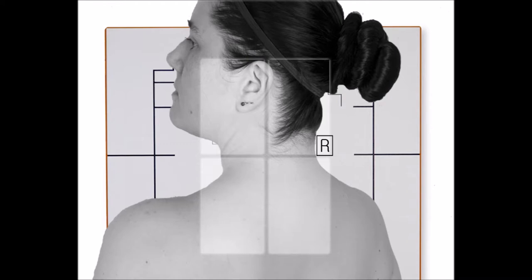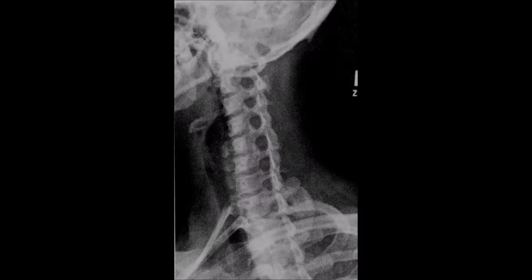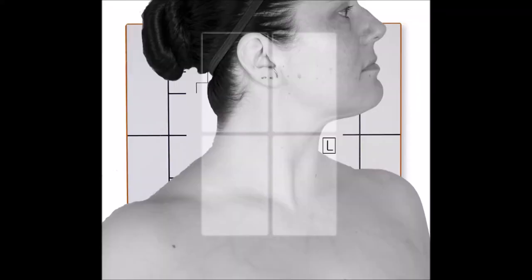Protract chin slightly to prevent superimposition of the mandible and vertebrae without superimposing the base of the skull over C1. If superimposition occurs, the head can be turned laterally.